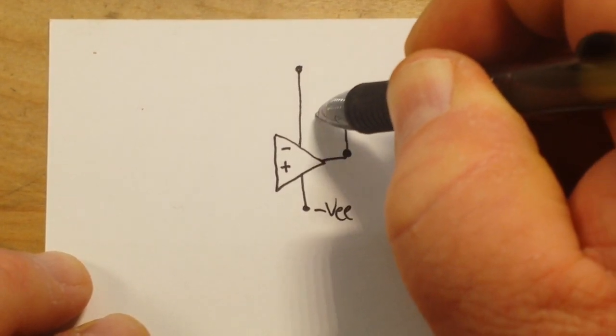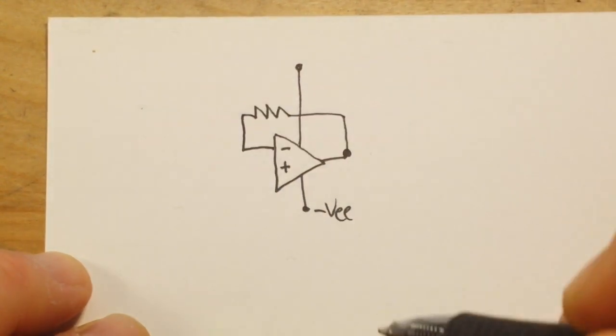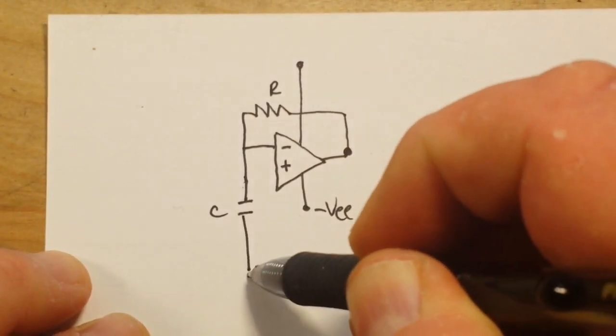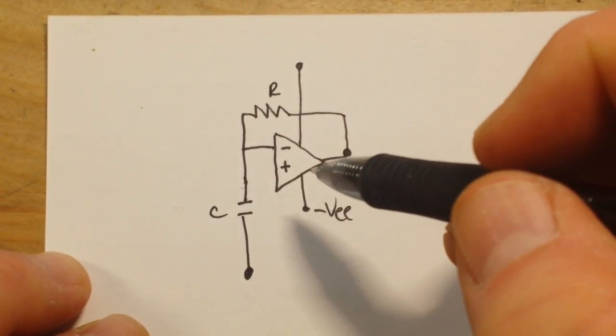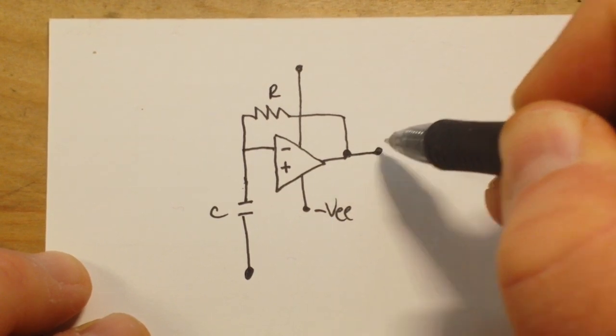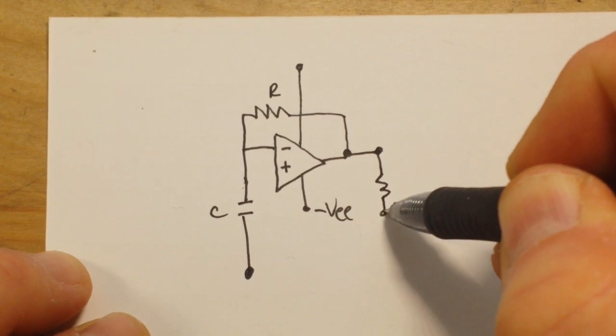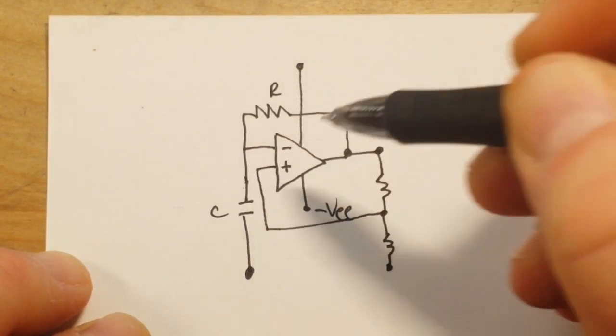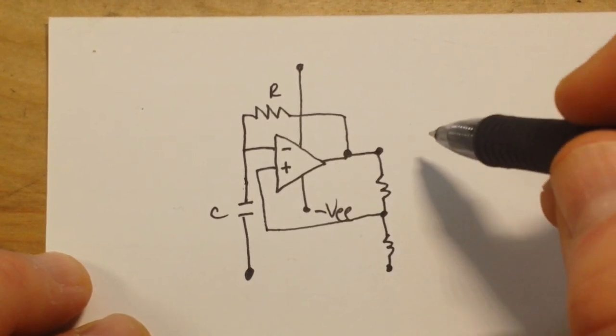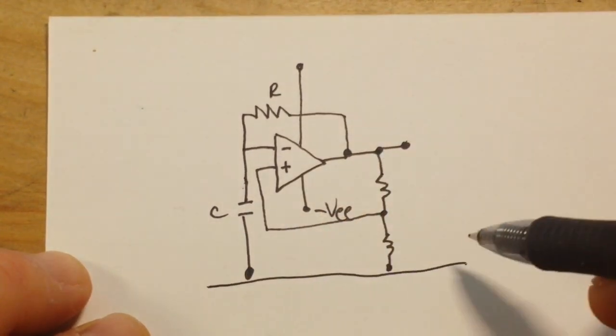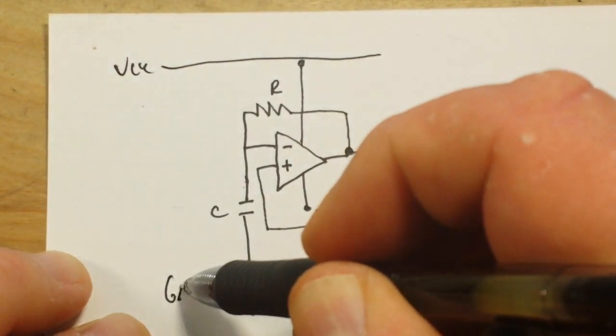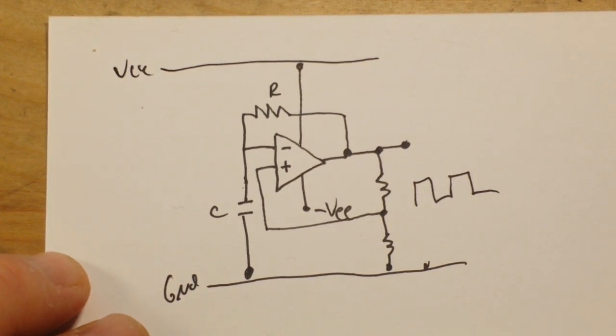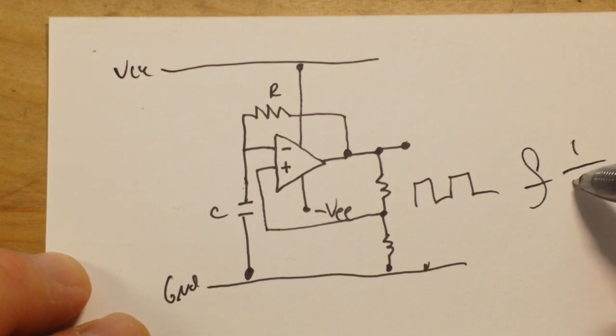Our output has our resistor R that goes to our inverting input. Then we also have our capacitor C which goes to ground. Then from our output, we create our voltage divider that goes to ground, and we bring that around and connect it to the non-inverting input. Then we can take VCC, ground, take our readings in here, and we'll get out a nice square wave at that frequency of 1 over 2RC.